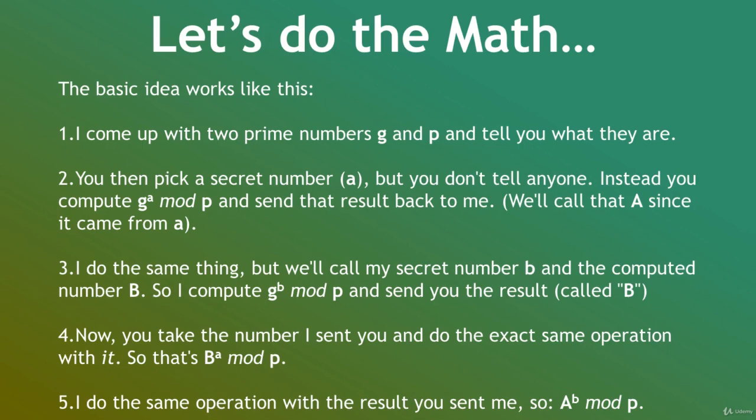I do the same thing, but we'll call my secret number, b, and the computed number, B. So I compute g to the b, modulo p, and send you the result, called B.